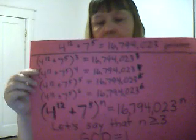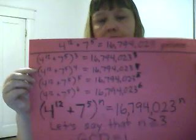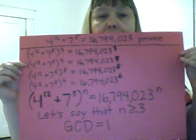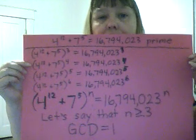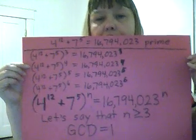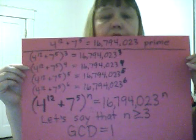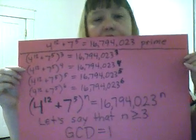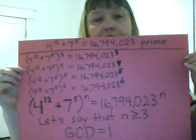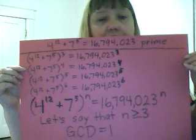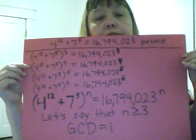Another equation — counter example. 4 to the 12th plus 7 to the 5th equals 16,794,023 — another prime number. Take it to the 3rd, 4th, 5th, 6th, etc. power. Let's say that n is greater than or equal to 3. GCD equals 1.